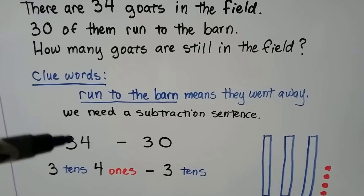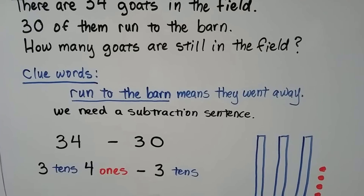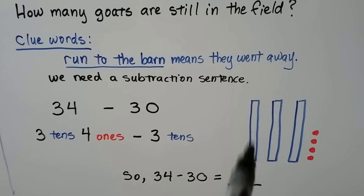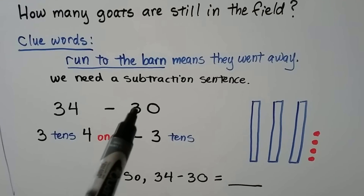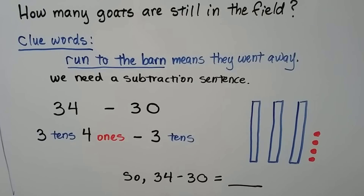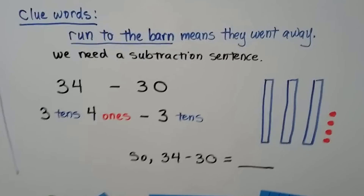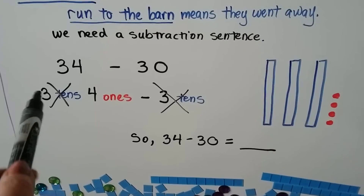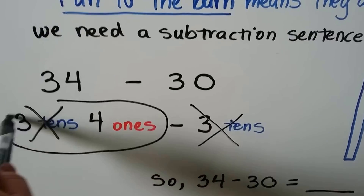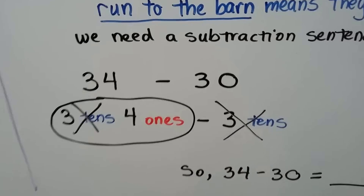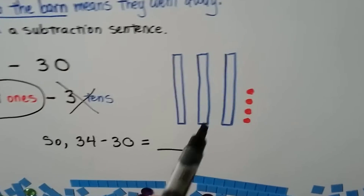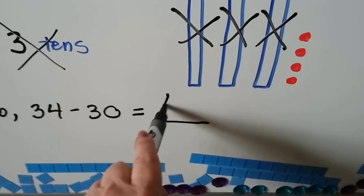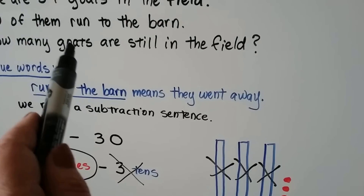We have thirty-four as our minuend minus thirty as our subtrahend. We can use counters. We have three tens for thirty and four ones — that makes a group of thirty-four. We need to take away three tens. Thirty means three tens. If we have three tens and four ones and we take away the three tens, the only thing that's going to be left is the four ones. We have three tens and four ones — thirty-four. If we take away these three tens, the only thing left are the four ones. So the answer is four goats.